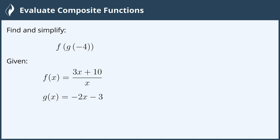Find and simplify f of g of negative 4, given that f of x equals 3x plus 10 all divided by x, and g of x equals negative 2x minus 3.